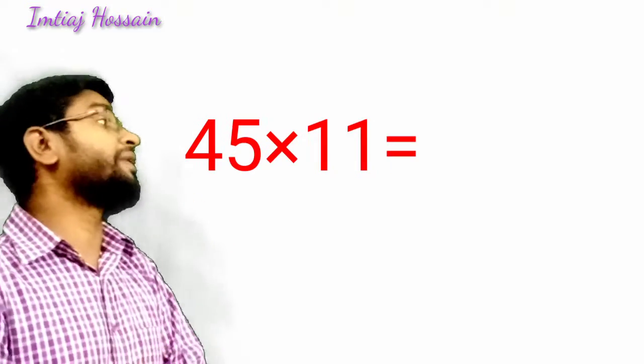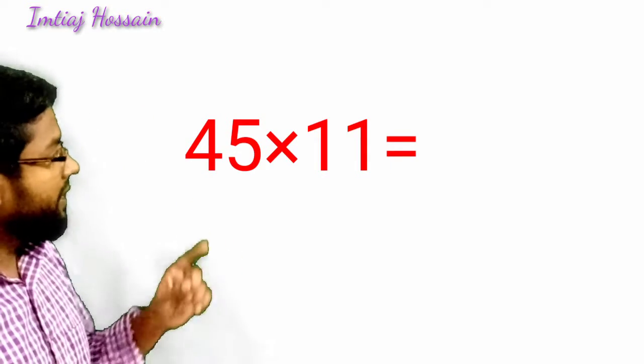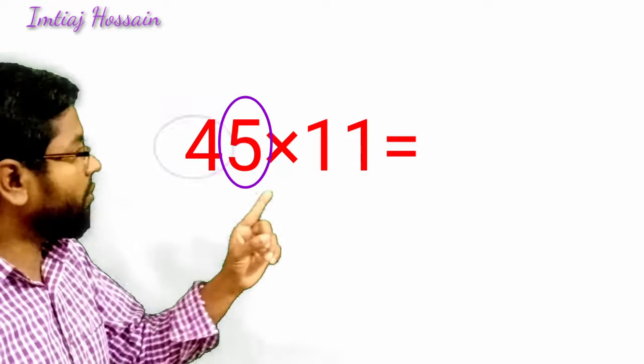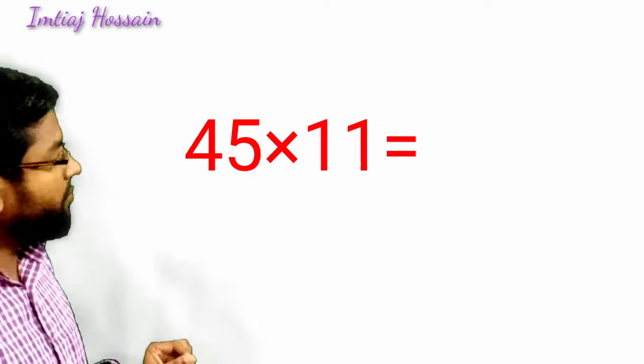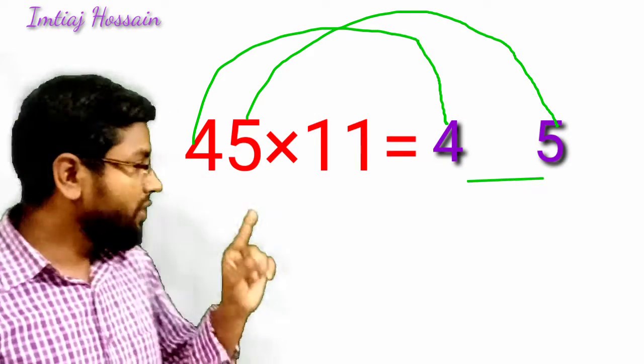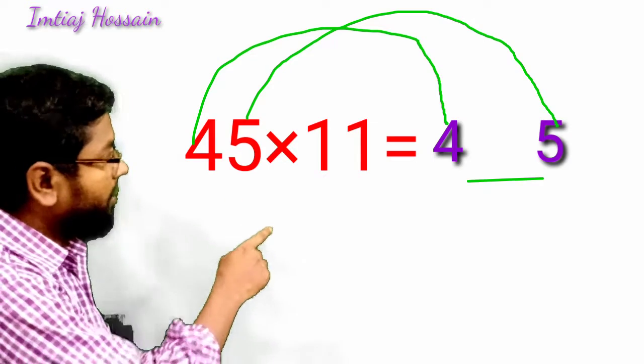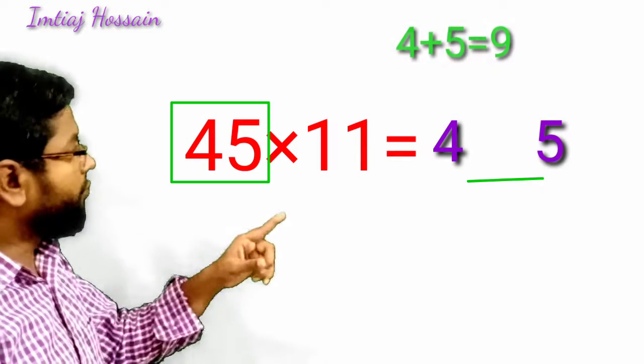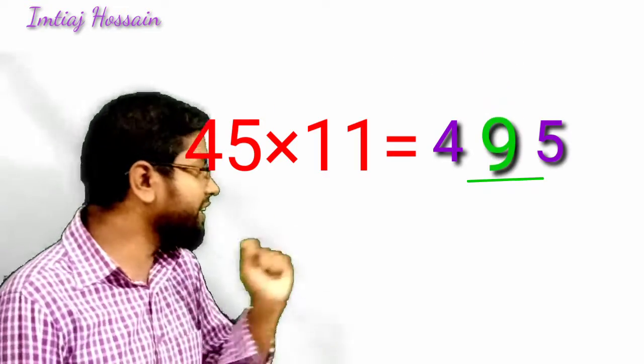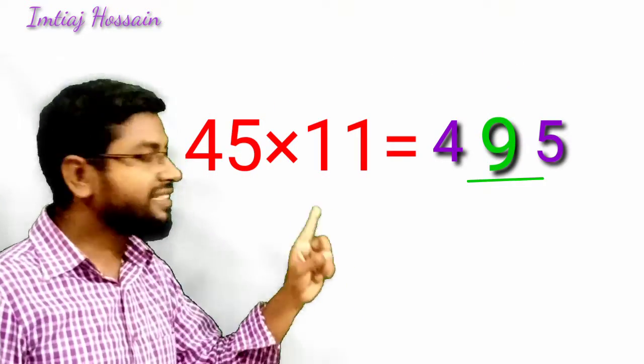45 times 11. How will I apply tricks? Look, 45. 4 and 5 are the digits. First digit is 4, last digit is 5. We will keep these digits as the answer and leave a gap. Now I will add these two digits, 4 and 5. If I add, what will it be? 9. That 9 will be in between. So the answer is 495.